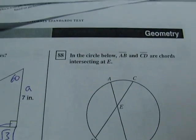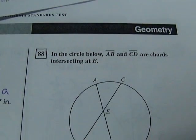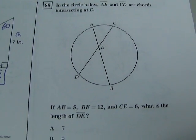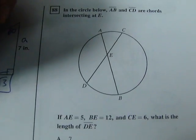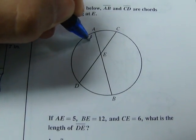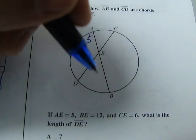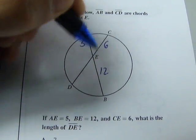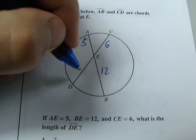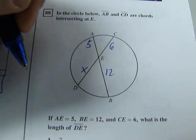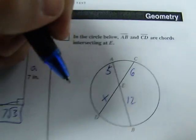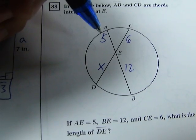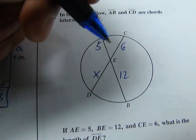Okay, 88. In the circle below, segment AB and segment CD are cords intersecting at E. If AE is 5, and BE is 12, and CE is 6, what is the length of DE? So we'll call this X. Alright, so this one is pretty tricky. It doesn't lend itself to easy solution if you don't know how to do it.